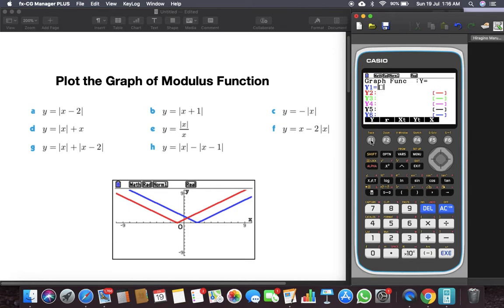Let's push in there, and then you can type in your function like x minus 2, hit execute, and hit F6 to draw it. There you go, and you have the graph of modulus of x minus 2.